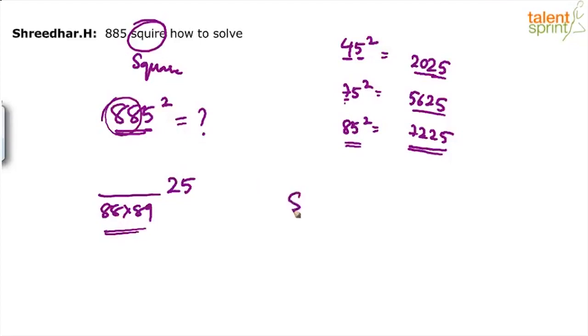Now 88 into 89 again can be done in multiple ways. 88 into 89. Like maybe you can do split and merge. 89 can be taken as 100 minus 11 or 80 plus 9 or 88 plus 1. Or you can take it as 88 squared plus 88.